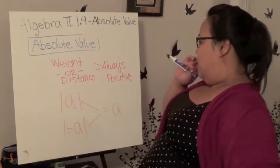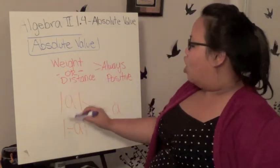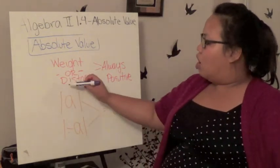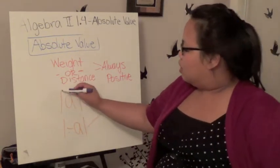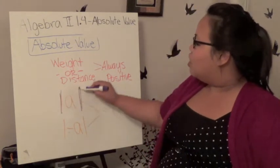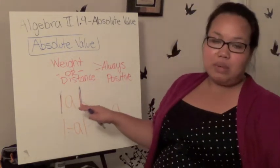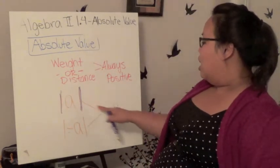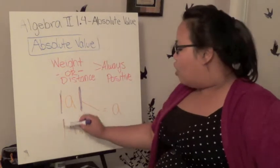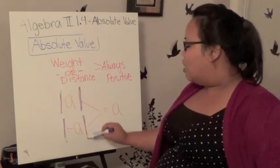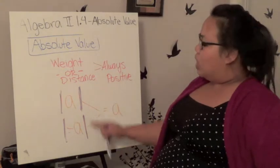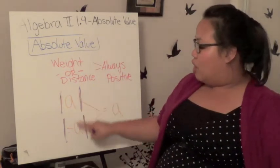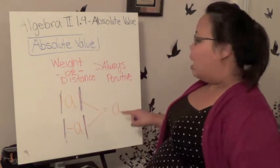Absolute value is represented by these long vertical lines. They're put around a number, meaning everything inside is an absolute value. If I have the absolute value of a, it equals a. But also, if I have the absolute value of negative a, it still equals a. That's what absolute value means - I'm going to have two different problems, one positive and one negative, but they're both going to equal a.